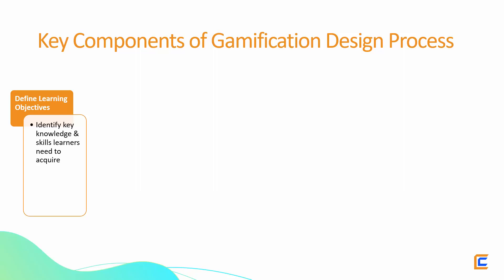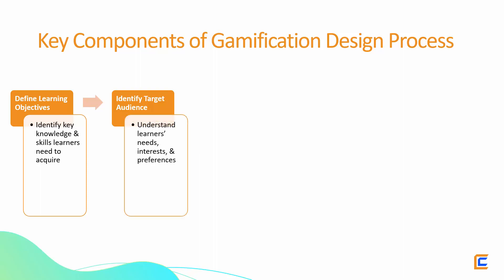Step 2: Identify Target Audience. The second step in the gamification design process is to identify the target audience for your e-learning course. This involves understanding the needs, interests, and preferences of the learners. By knowing your audience, you can design gamification elements that will appeal to them and keep them engaged.